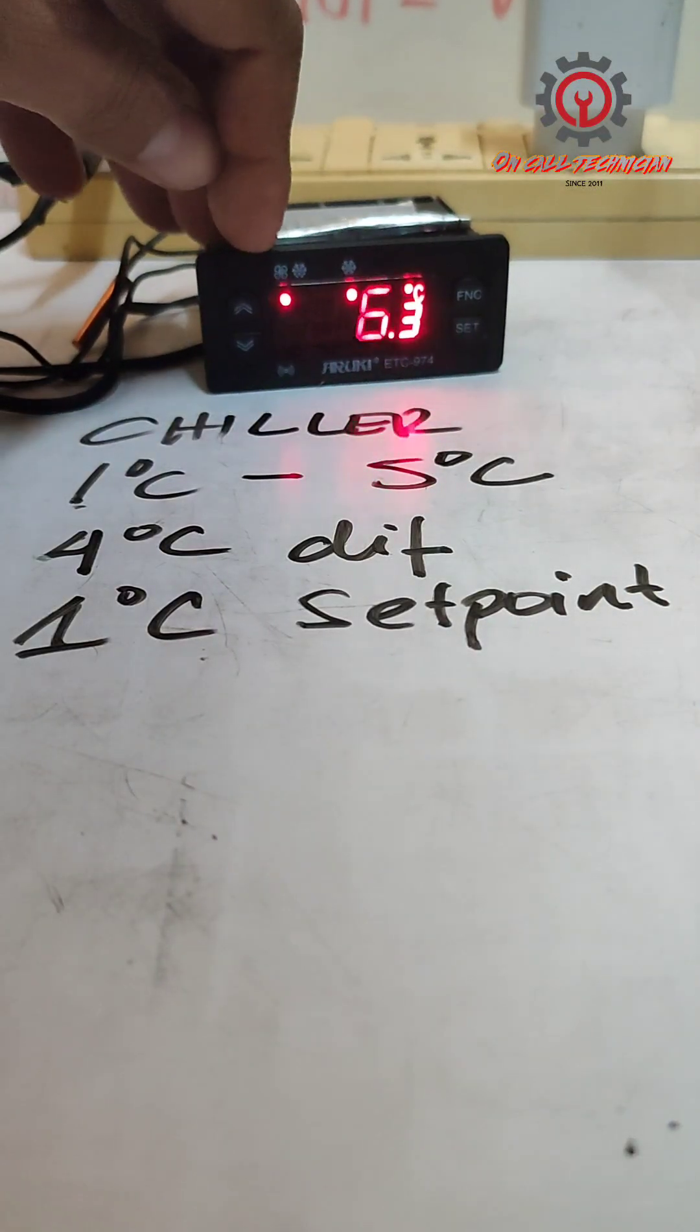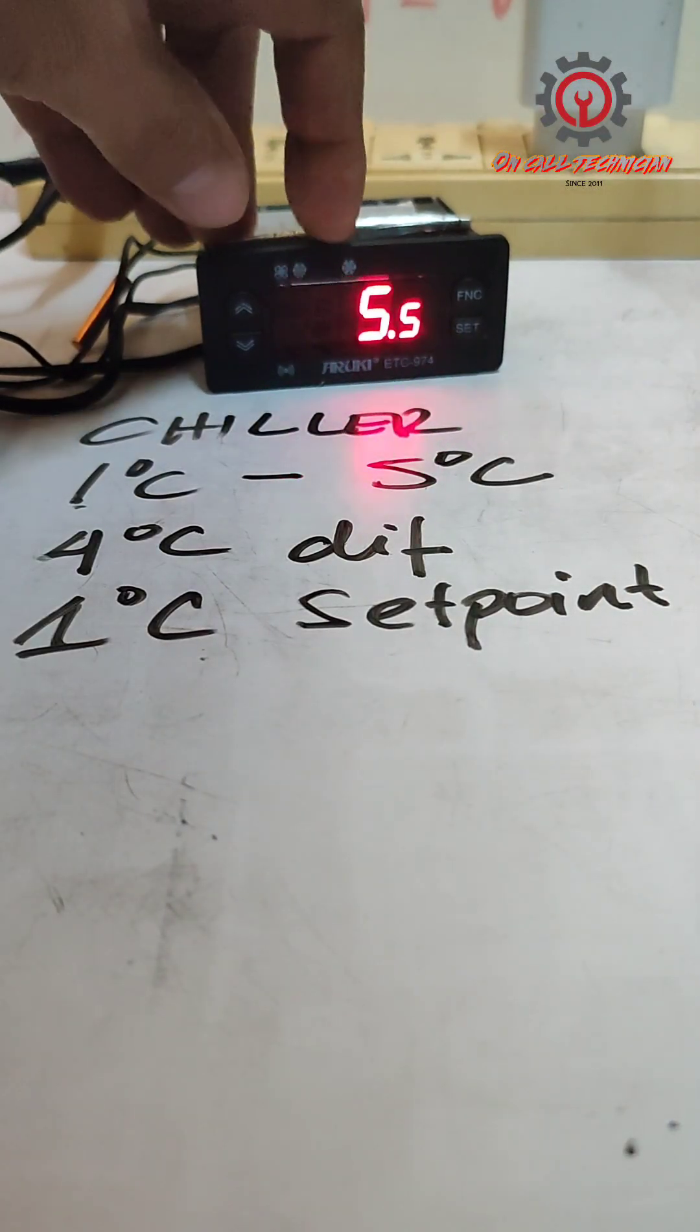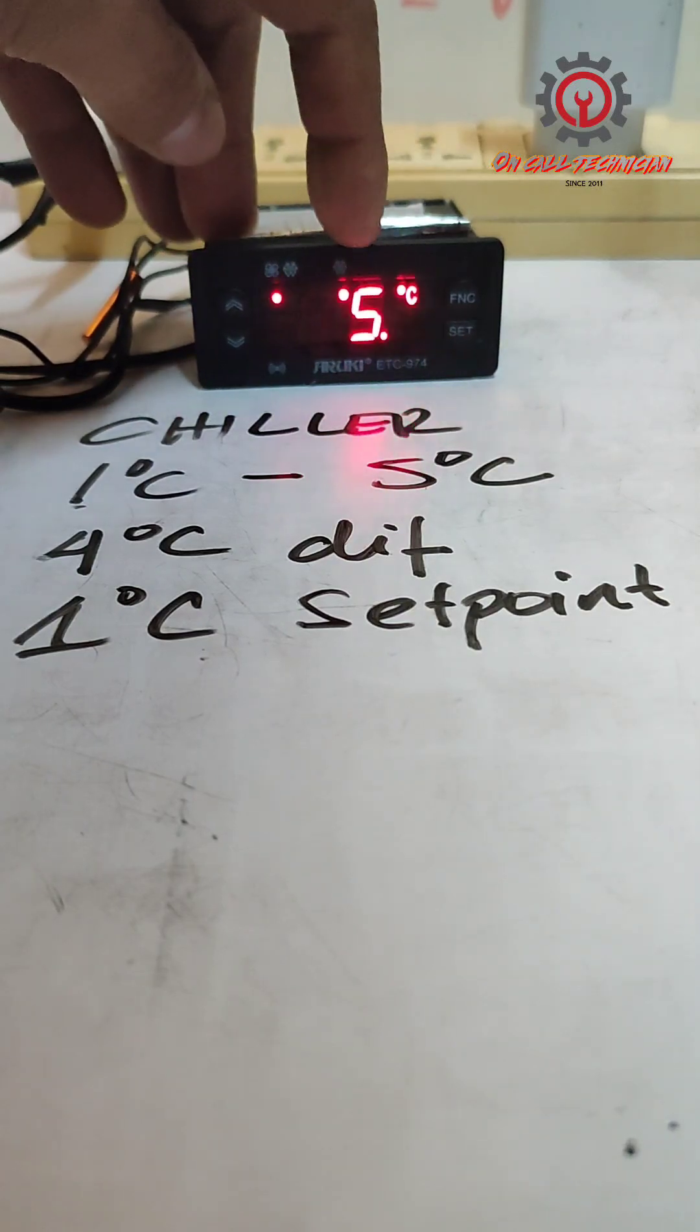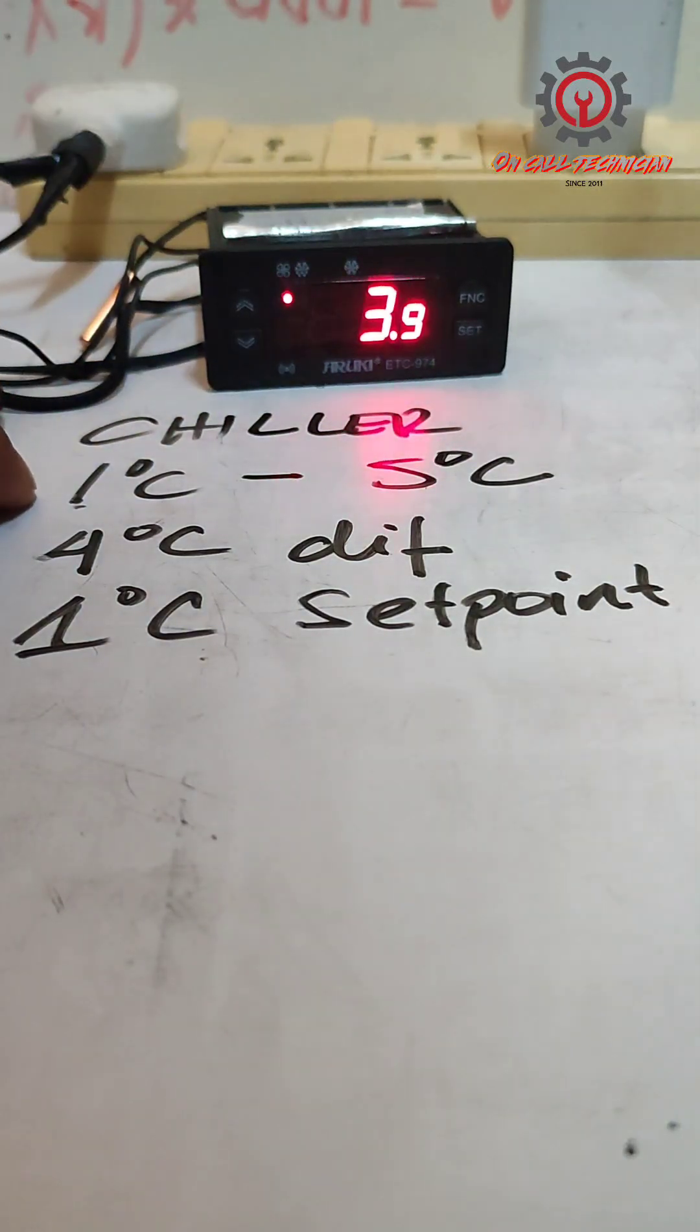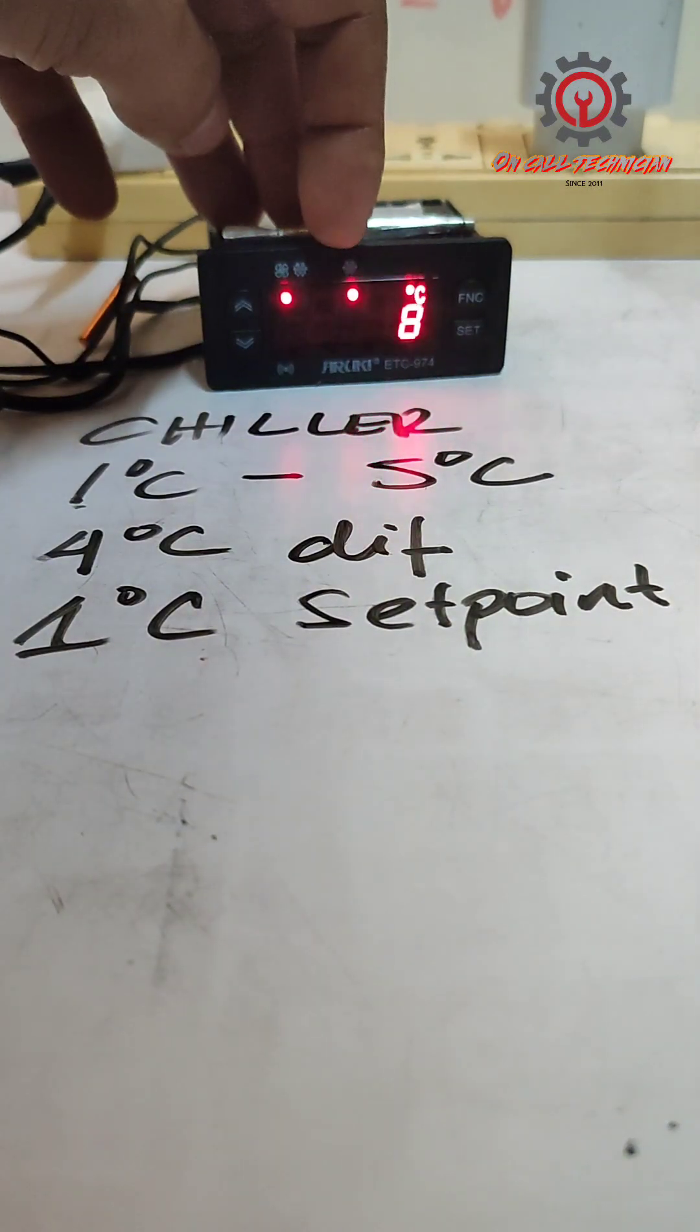The fan motor symbol here and the compressor symbol here light up. Once the positive 4.7 reaches positive one, the compressor here will turn off.